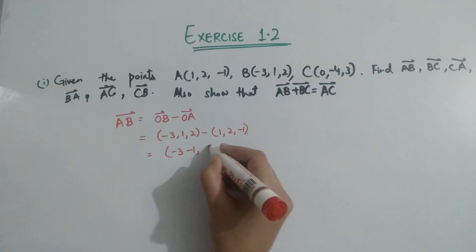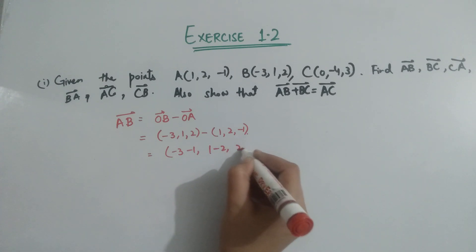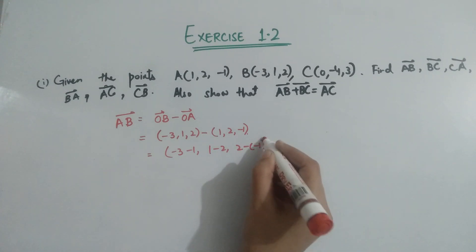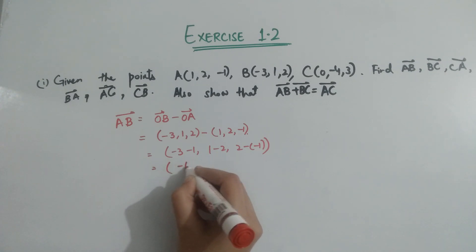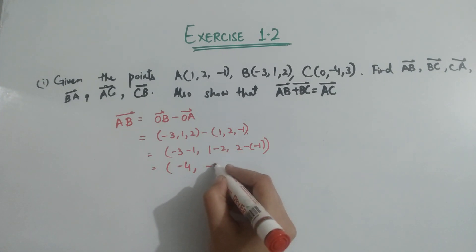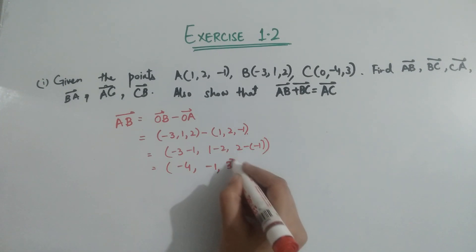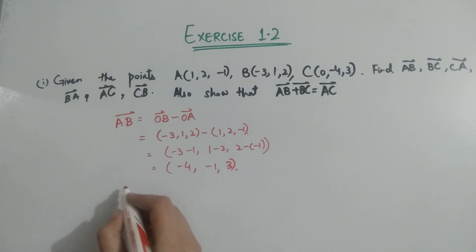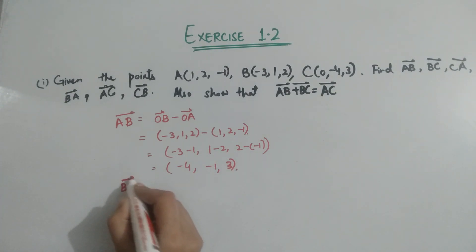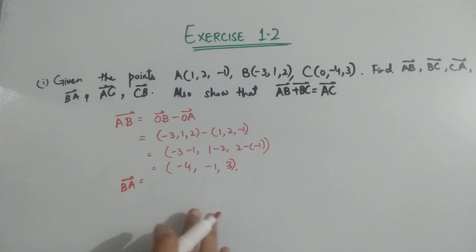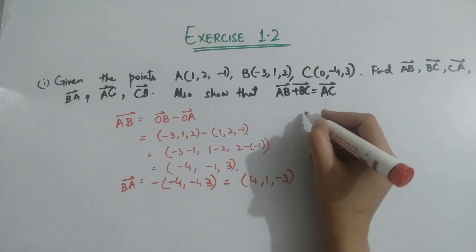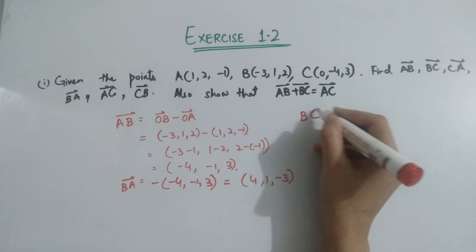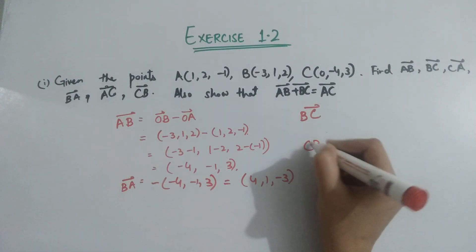Now let's solve it: 1 minus 2 and 2 minus minus 1. Minus 3 minus 1 is minus 4, 1 minus 2 is minus 1, and 2 plus 1 is 3. This gives us AB. You can automatically find BA by multiplying by minus 1. This is the trick to save time. Next, find BC and CB.